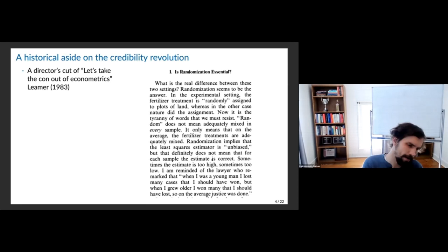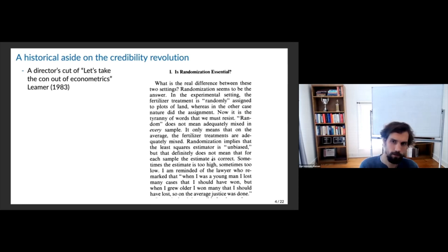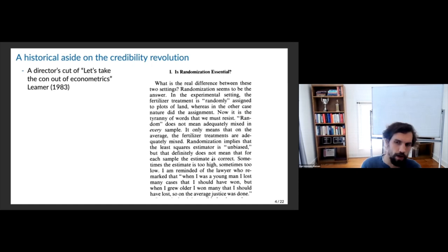What Leamer sets up is that randomization appears to be the answer. The real difference is that in one place we had randomization and in the other we had observational data. In the experimental setting, by randomly assigning fertilizer treatment to plots of land, this creates a certain validity or believability to the assumptions. Randomization really just creates the idea that the OLS estimator is unbiased.